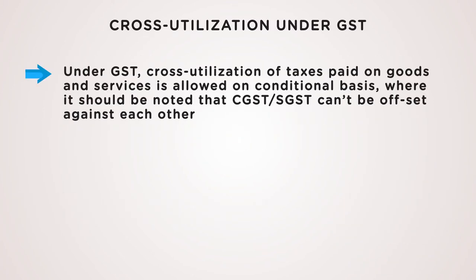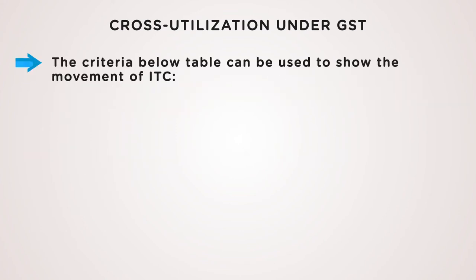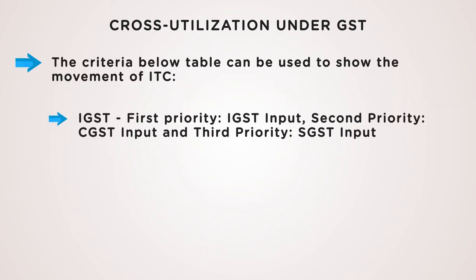Under GST, cross-utilization of the taxes paid on goods and services is allowed on a conditional basis, where it should be noted that CGST and SGST can't be offset against each other. Cross-utilization under GST has been changed with effect from 1st February 2019. The below criteria can be used to show the movement of ITC and cross-utilization under GST.